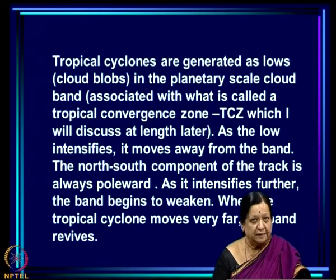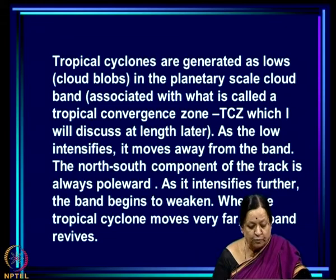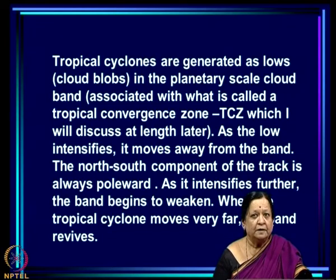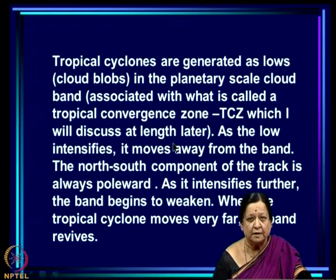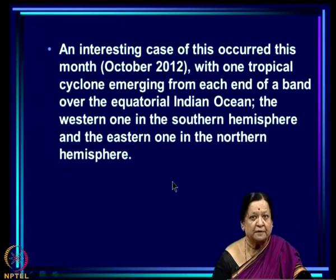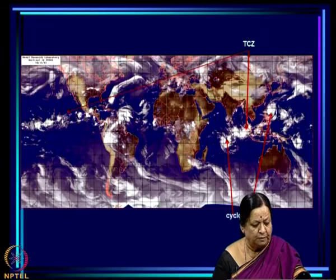The cloud band associated with a tropical convergence zone is an east-west cloud band occurring in the tropics. Tropical cyclones are generated as cloud blobs in this band. As the low intensifies it moves away from the band, and its north-south track component is always poleward. As cyclones intensify and move away, the parent band weakens; only when they move far away does the band revive.